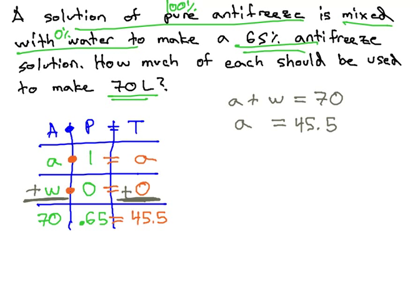This problem is quite convenient, as we already know what a equals, and to find w, we just have to plug that into the other equation. A plus w, or 45.5 plus w, equals 70.